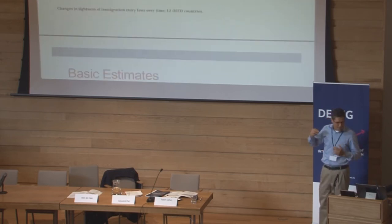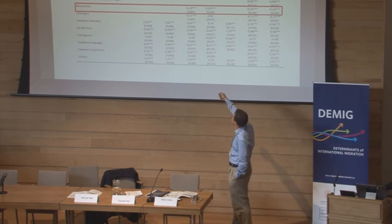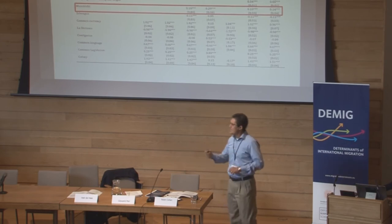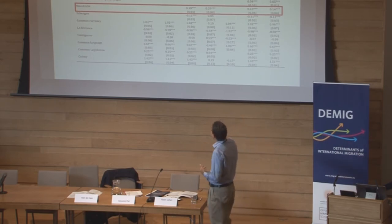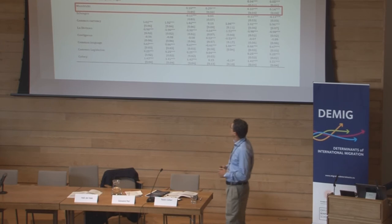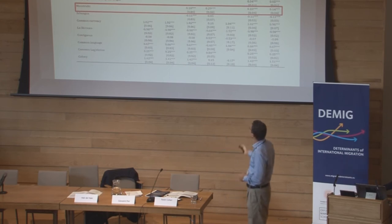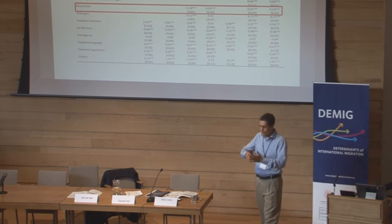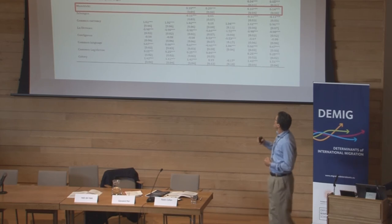Let me show a couple of estimates. In this approach it was pretty clear that our entry tightness index worked quantitatively in the expected direction — higher tightness reduces migration. But it was also pretty clear that the quantitative effect was very small. A coefficient of 0.02 means that by passing one reform that increased tightness by one, immigration decreased by 2% of the total. So if immigration was 1% of the population, it would become about 1.02%.